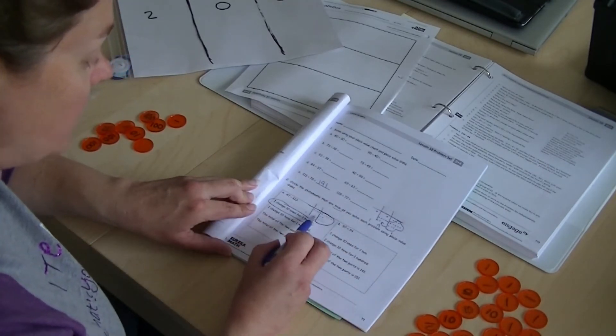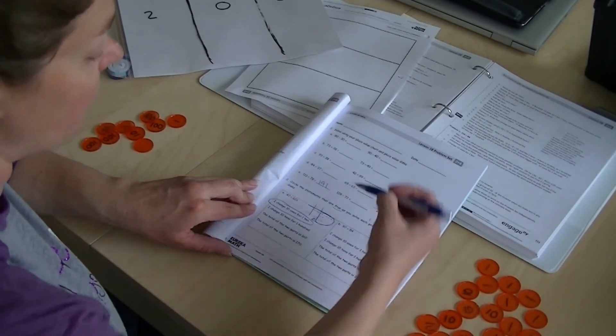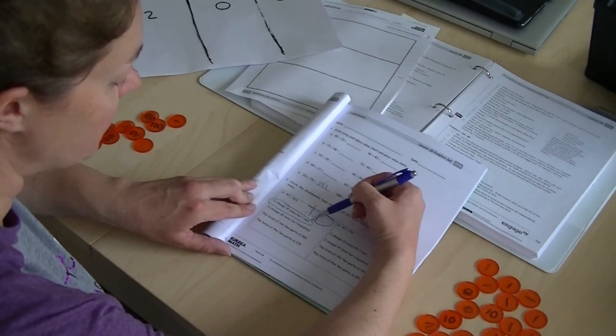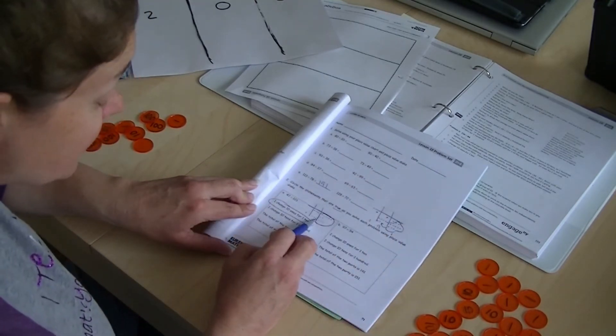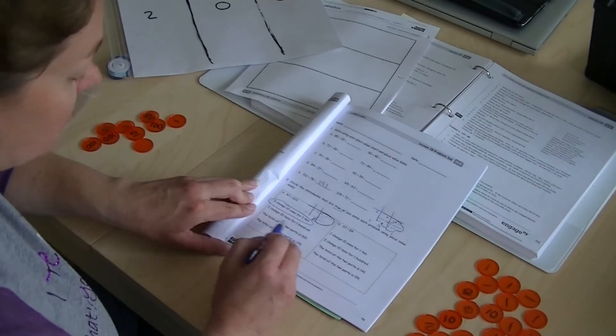I changed 10 tens for 100. Well, let's see if we have 10 tens. 1, 2, 3, 4, 5, 6. And this guy's number 7. Do we have 10 tens? No, we don't. So we're not circling that.